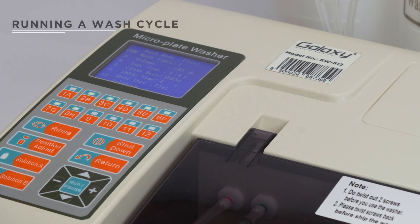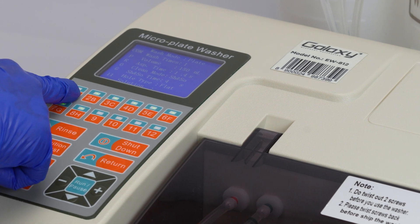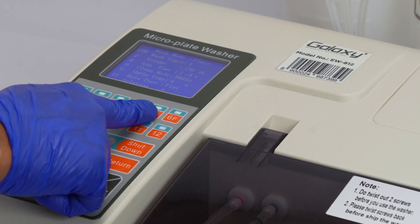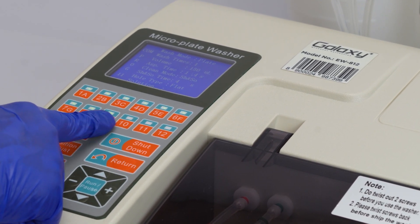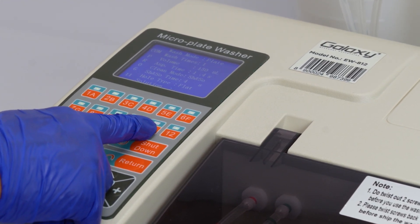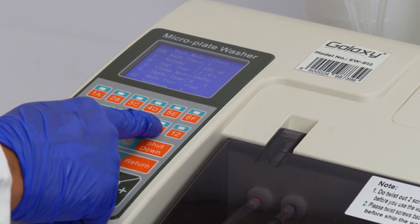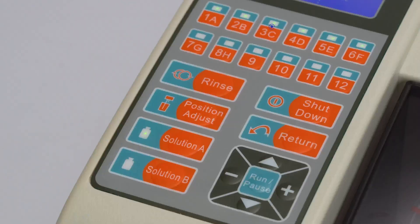Use the washing strips based on the actual sample quantity. Strips 1A, 2B, 3C, 4D, 5E, 6F, 7G, 8, 9, 10, 11 and 12 correspond to each strip. If the indicator lamp is on, it means the strip will be washed.